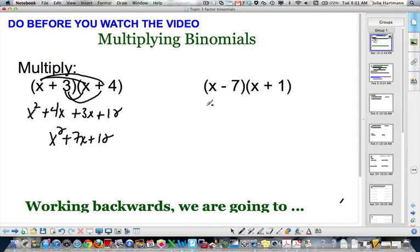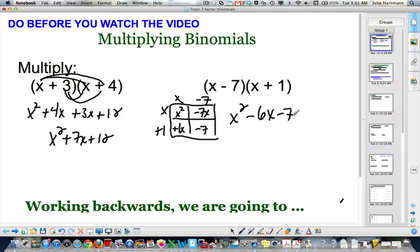Okay, with this one, I know a lot of you do the box. x minus 7, x plus 1, that's x squared, minus 7x plus 1x, and minus 7. So, x squared, negative 7x plus 1x is negative 6x minus 7.